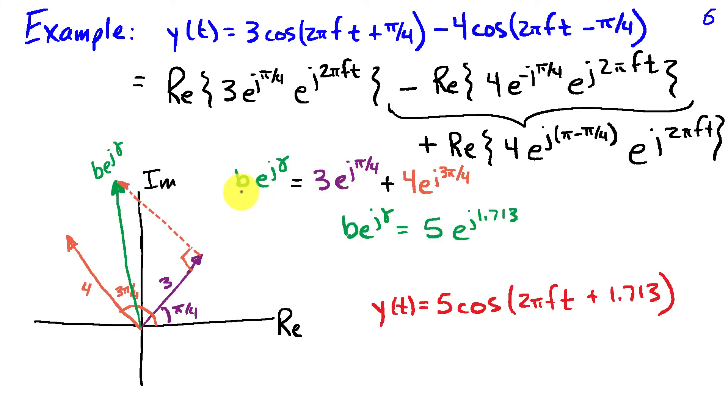So the phasor of the sum b e to the j gamma is going to be the sum of the individual phasors. That'll be 3 e to the j pi over 4 plus 4 e to the j 3 pi over 4. You can do this algebraically if you really want, or you can use a computer or calculator, and you find that b is 5. This is a 3-4-5 triangle. The angle ends up being 1.713 radians approximately. So I can write y of t as 5 cosine 2 pi ft plus the phase 1.713.